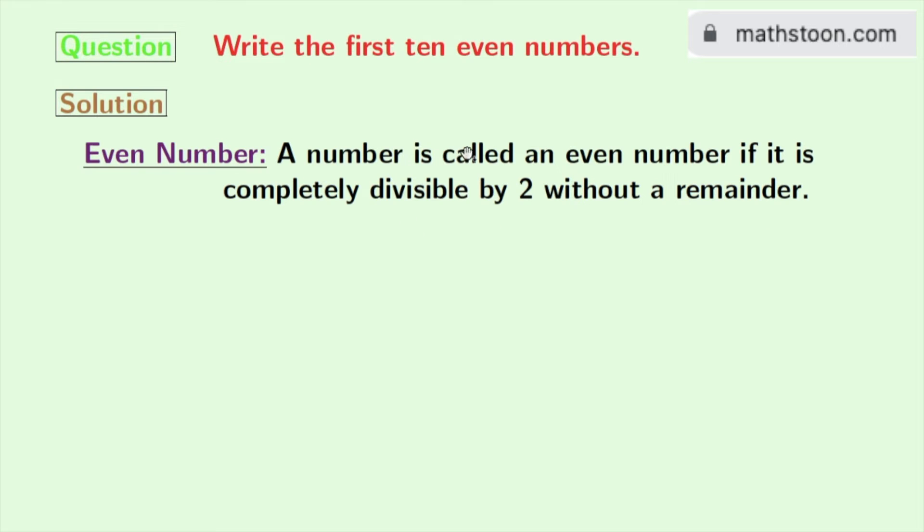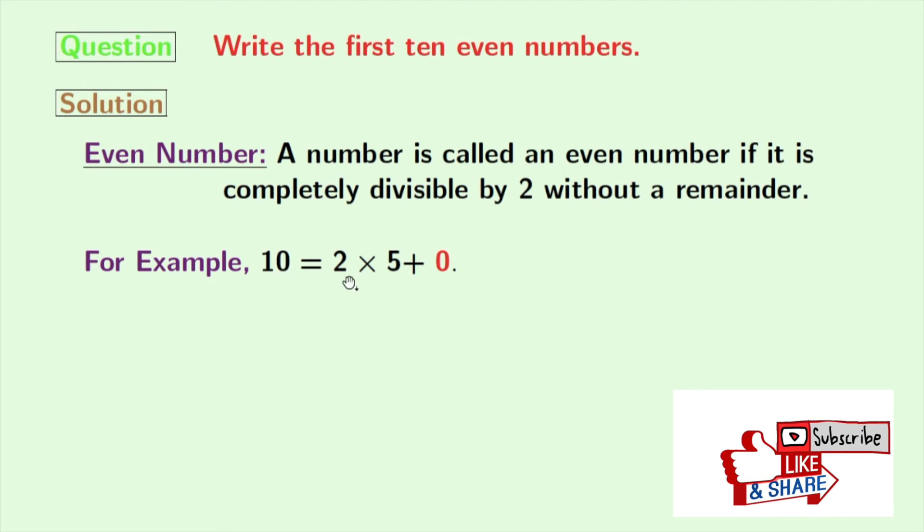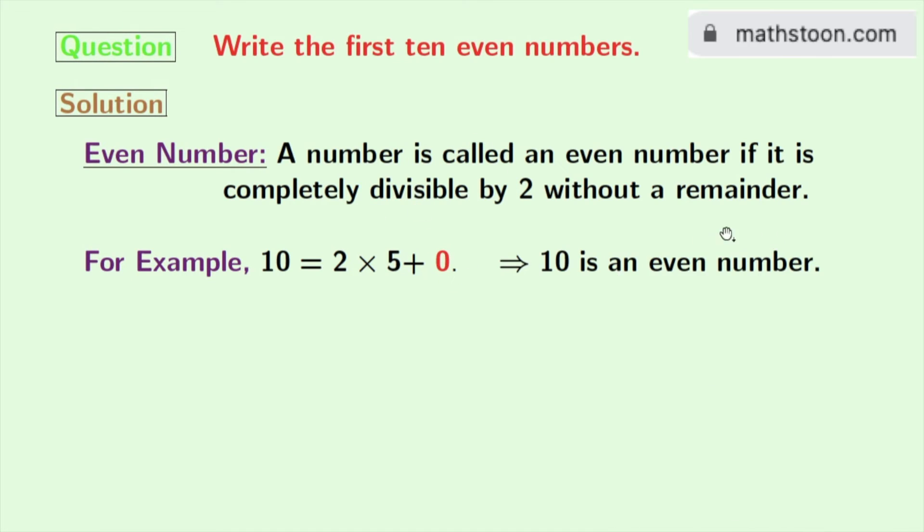Now we will consider this definition with an example. If we divide 10 by 2, then we get 0 as a remainder. So according to this definition, 10 is an even number.